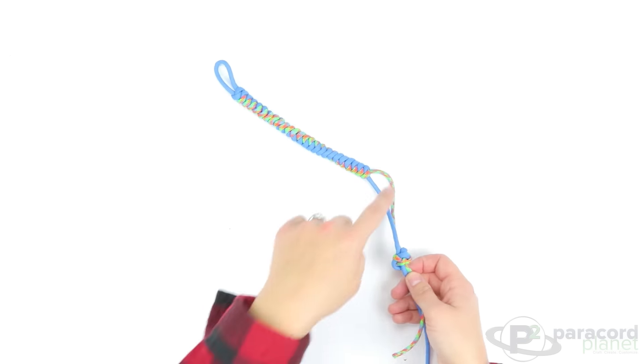So now I have my diamond knot done and all I will do at this point is snip off the ends, burn them, and then flatten them with the side of my scissors or the smoothing tool.